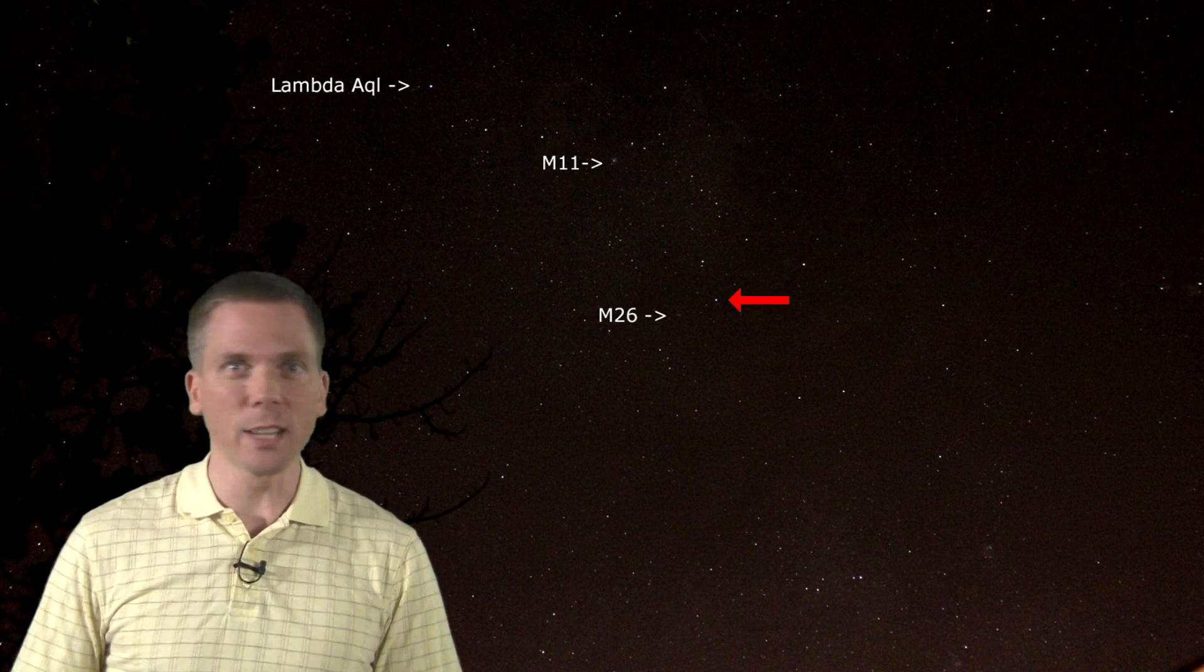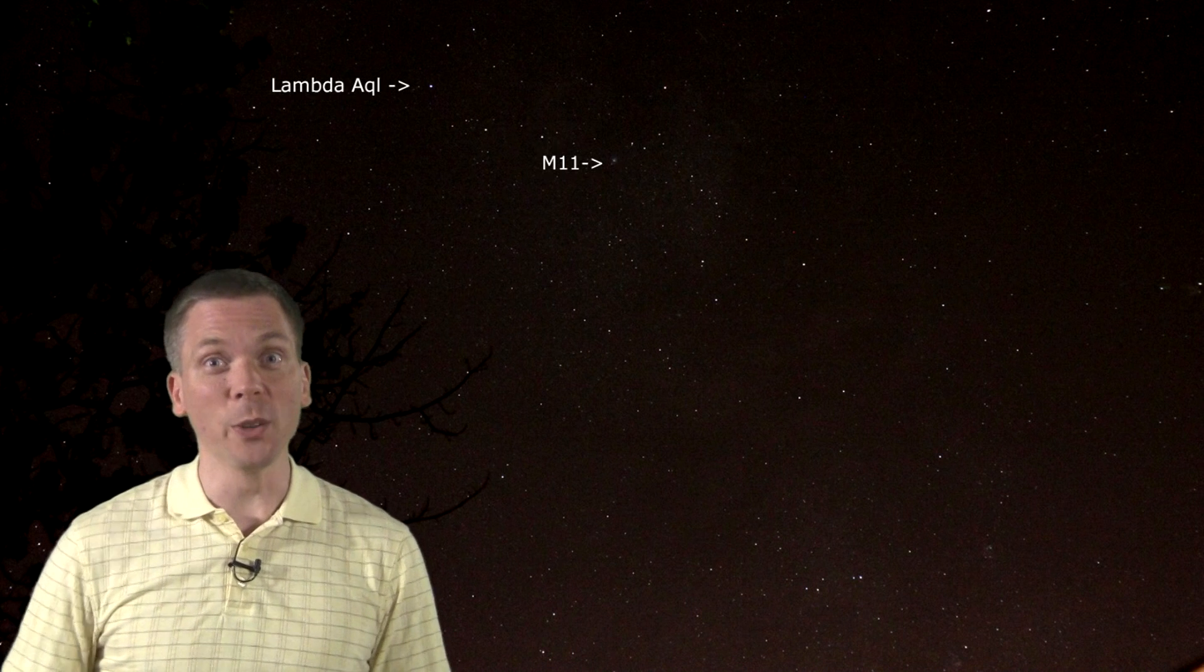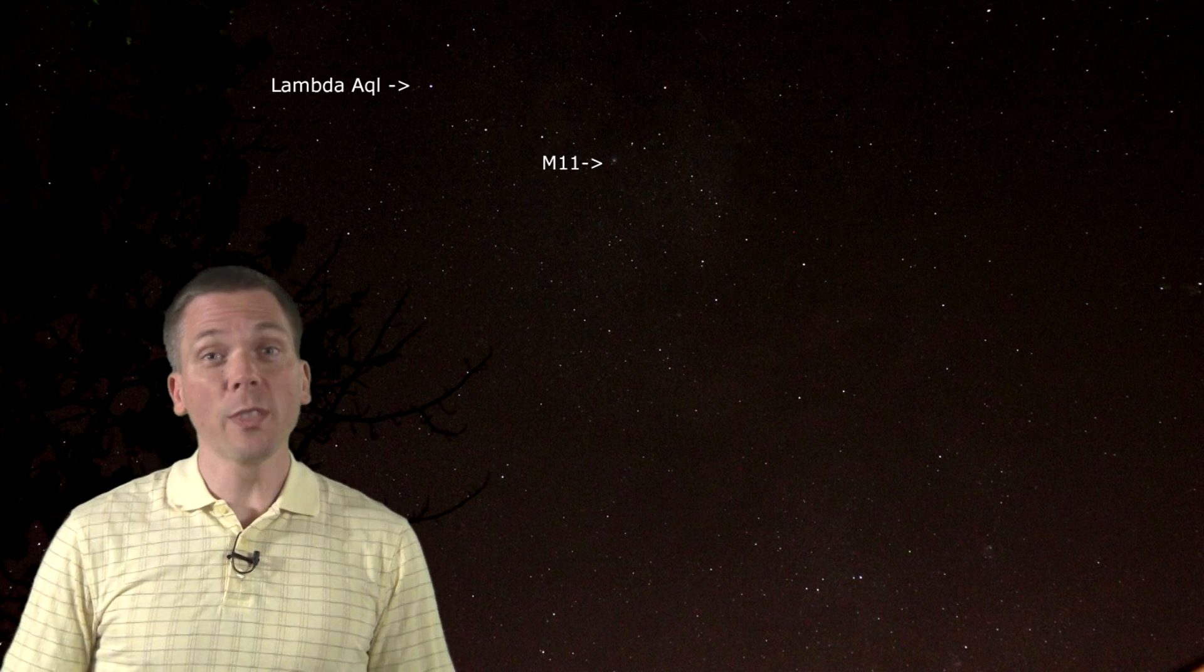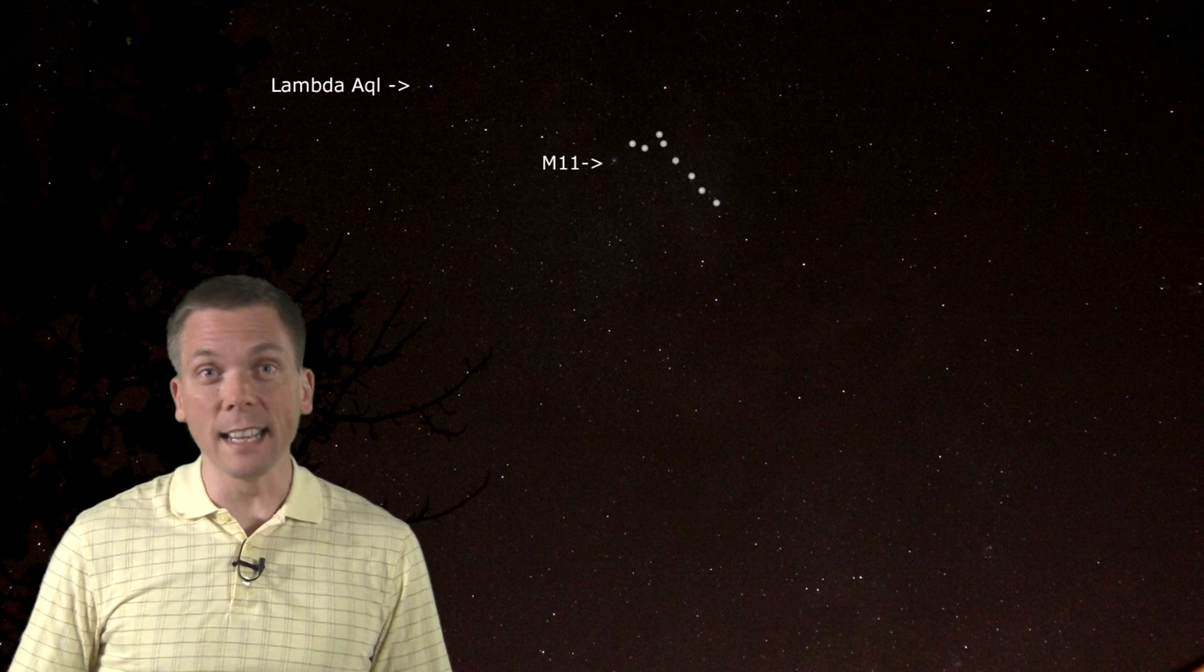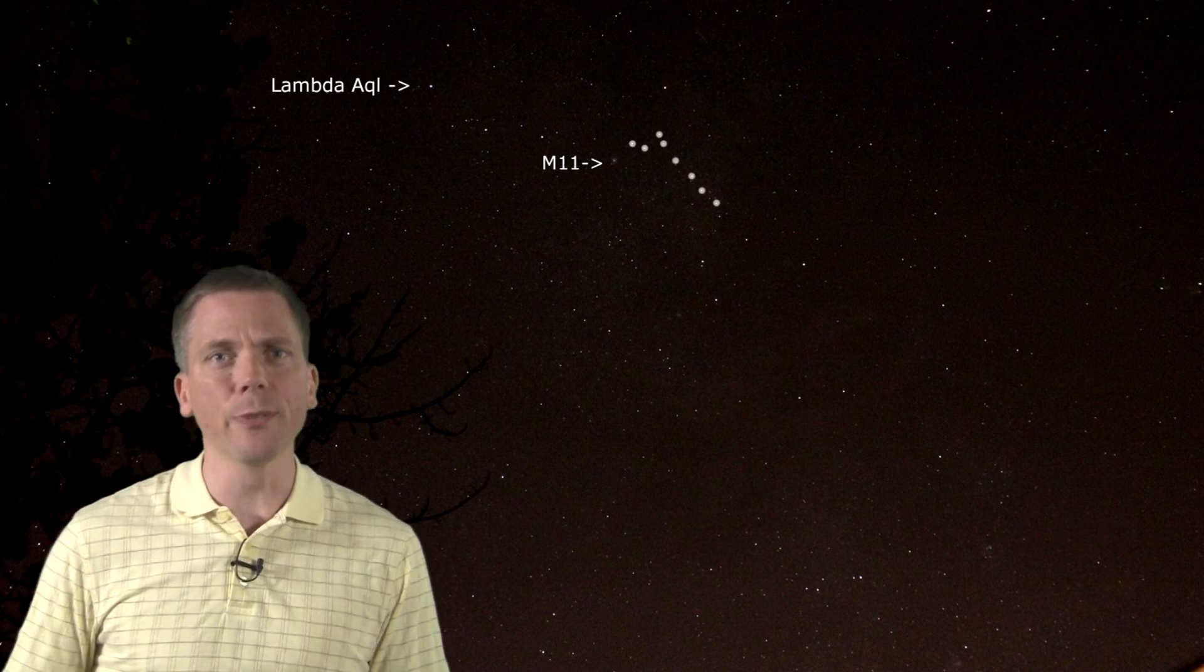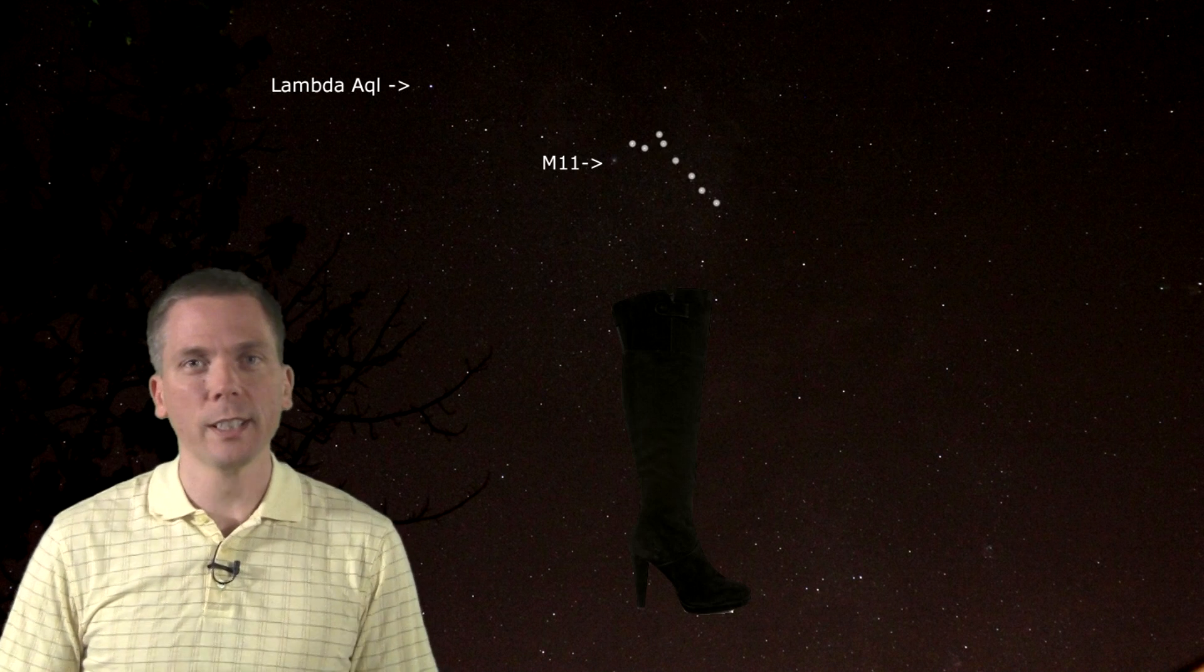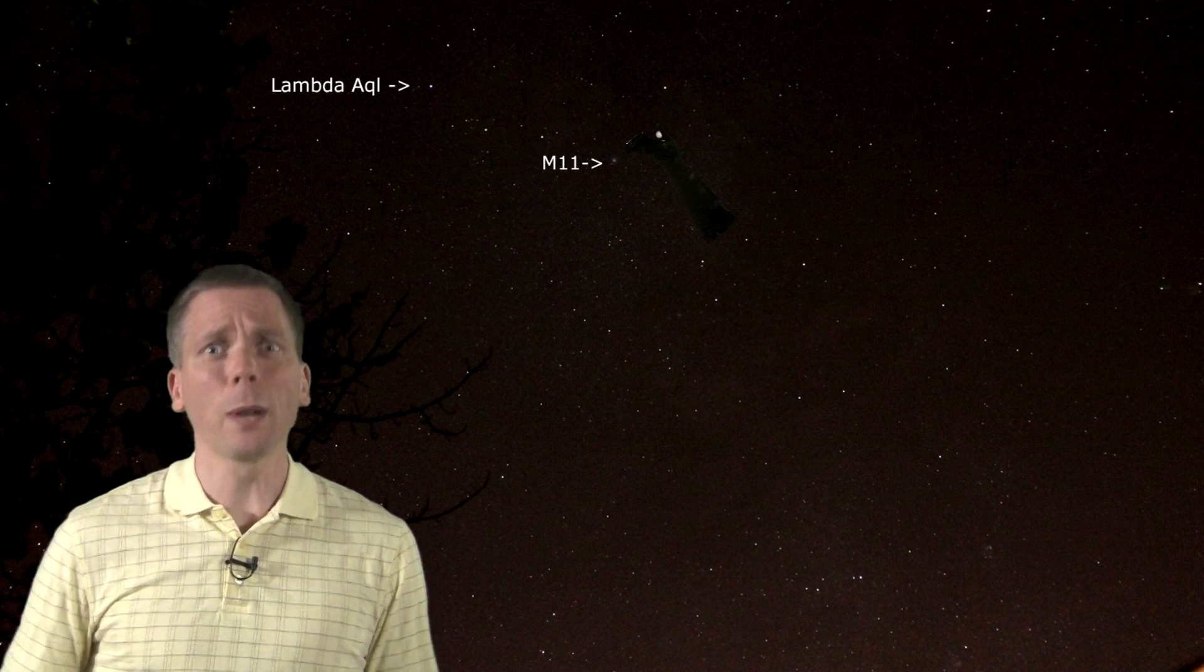But, that's not our next target. No, this video is for the birds. Wait, that didn't sound right. Anyway, look for this line of stars here, that has a little hook or curve near M11, do you see that? I call it the high-heeled boot. Ok don't ask, that's what I see, ok?